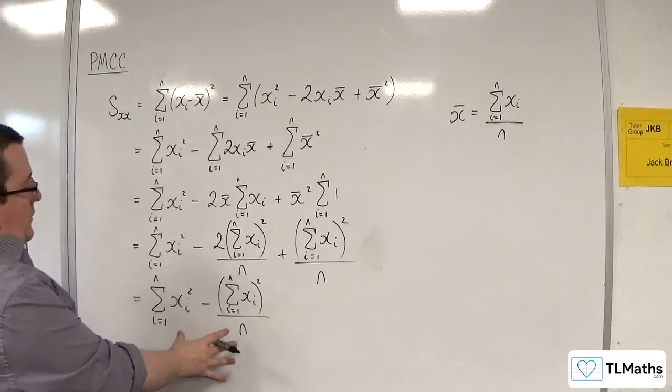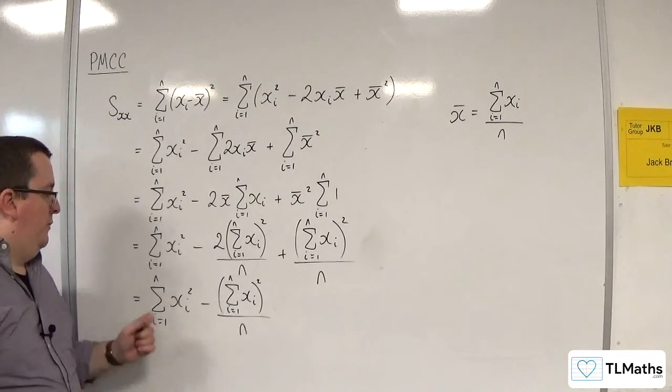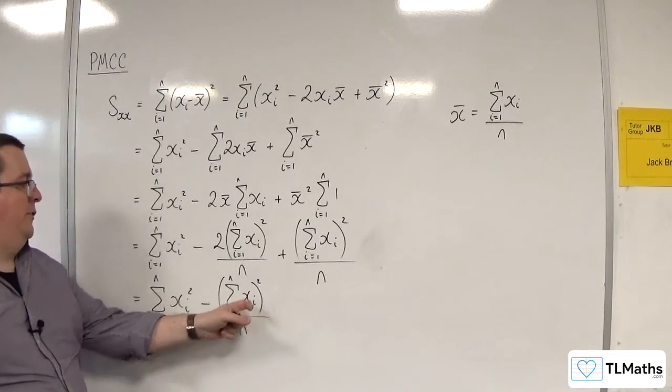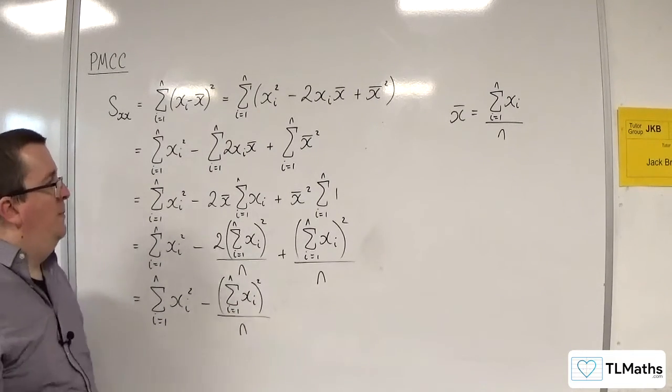So that is SXX using summary statistics. You've got the sum of X squared, you've got the sum of X, and you've got n. So you can use your summary statistics just to plug straight into that formula.